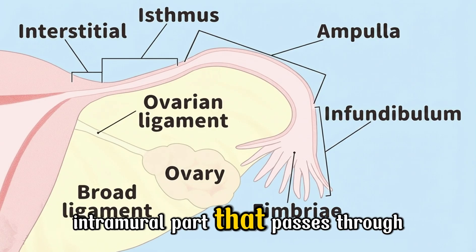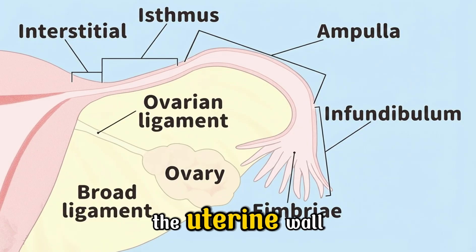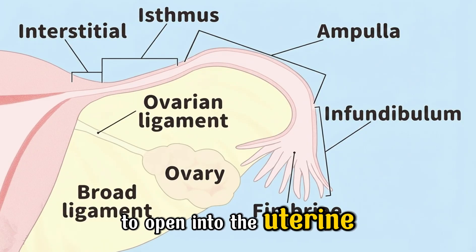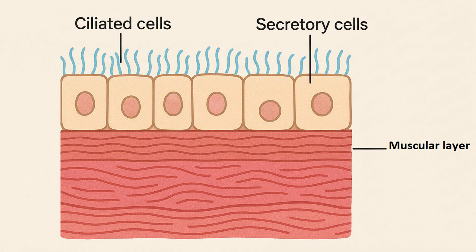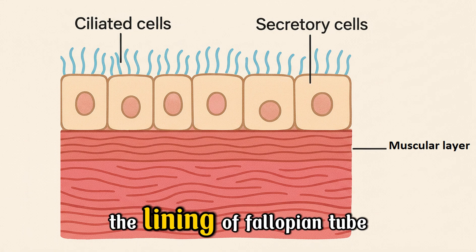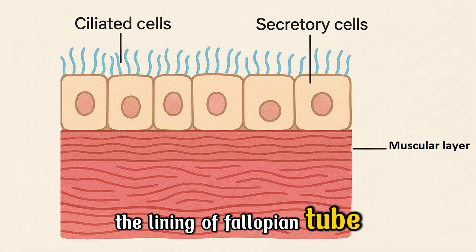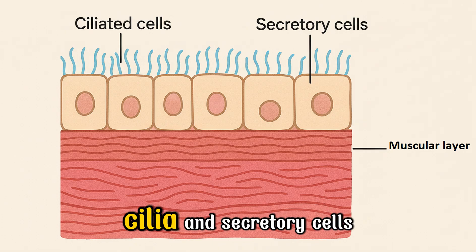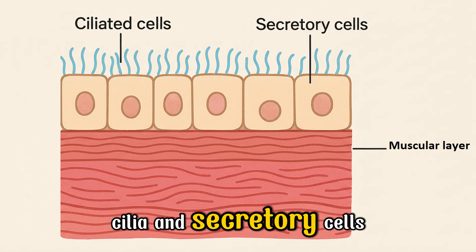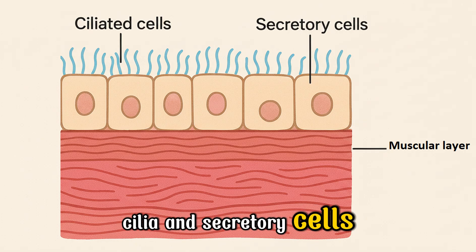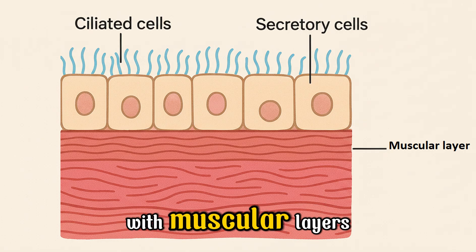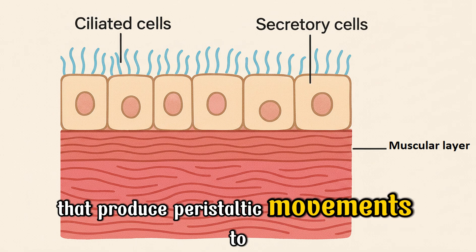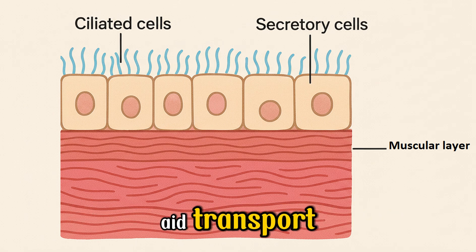The intramural part passes through the uterine wall to open into the uterine cavity. The lining of the fallopian tube contains ciliated cells and secretory cells, with muscular layers that produce peristaltic movements to aid transport.